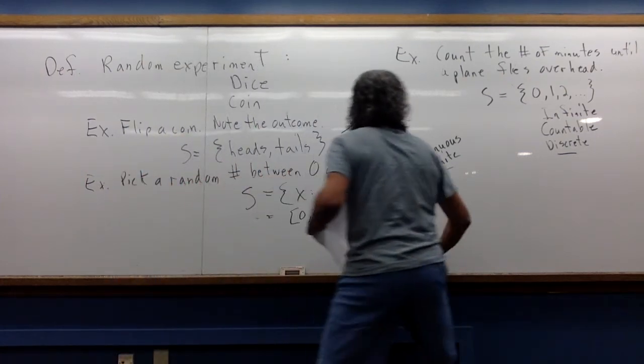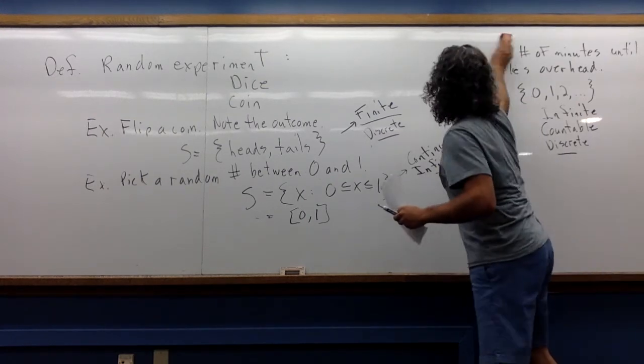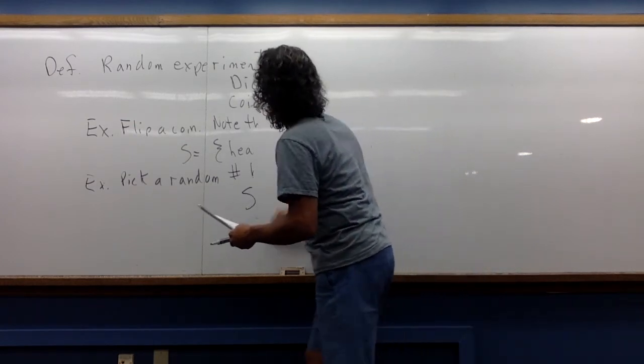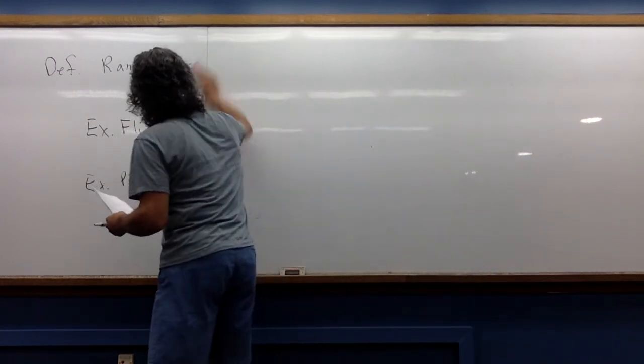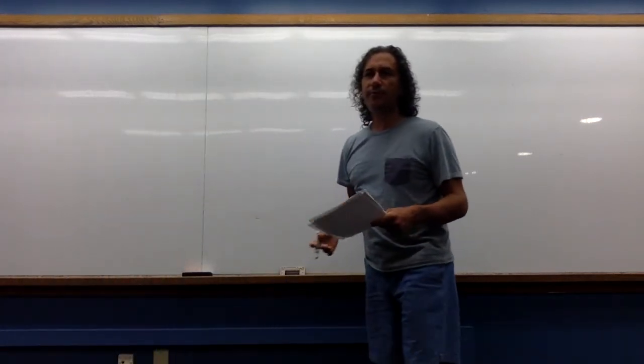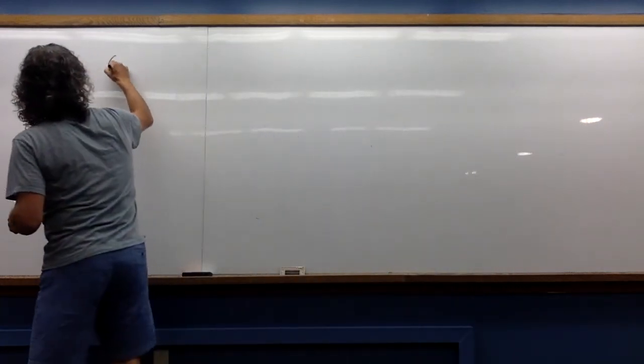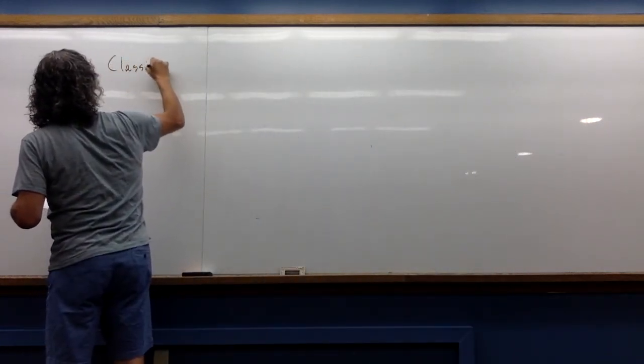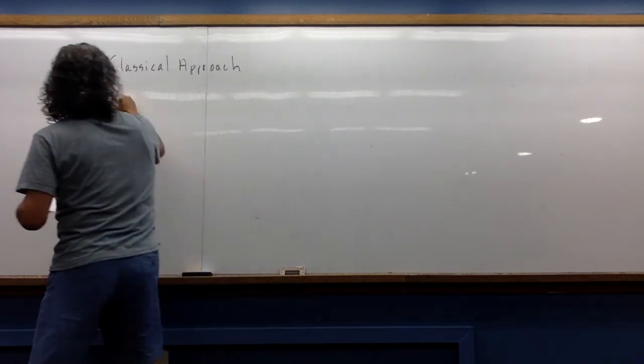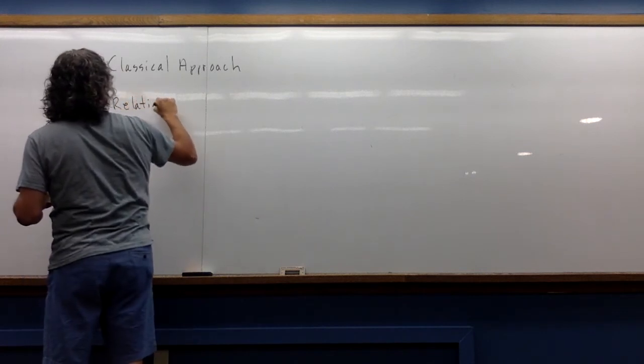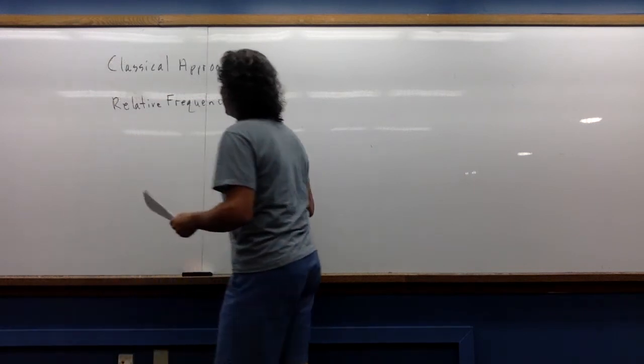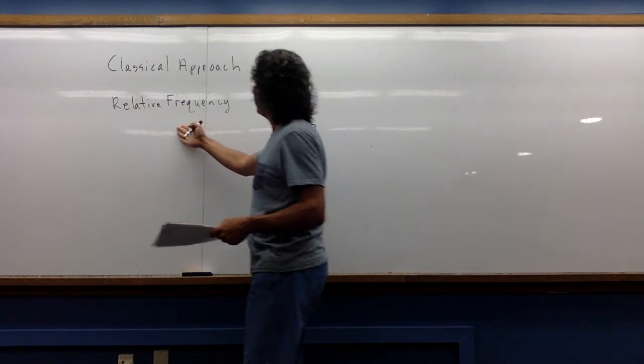So now that we have a sense as to what a sample space is, I want to start digging a little bit deeper in terms of different ways that we can think about probability. So there are really two main ways that you can think about probability. There's the classical approach and then there's the relative frequency approach. Right now we're just trying to think more about what that probability even means.